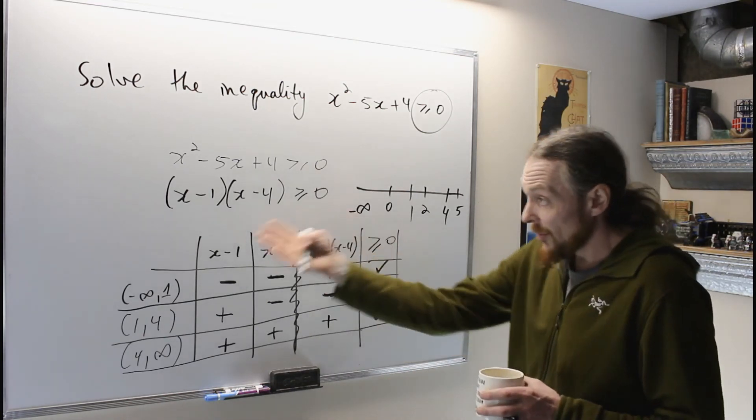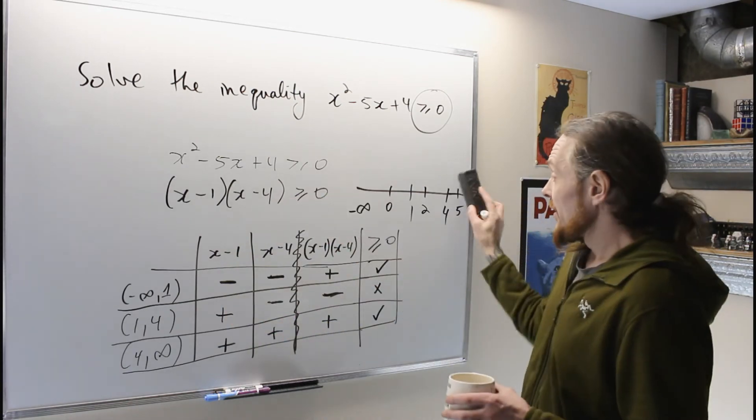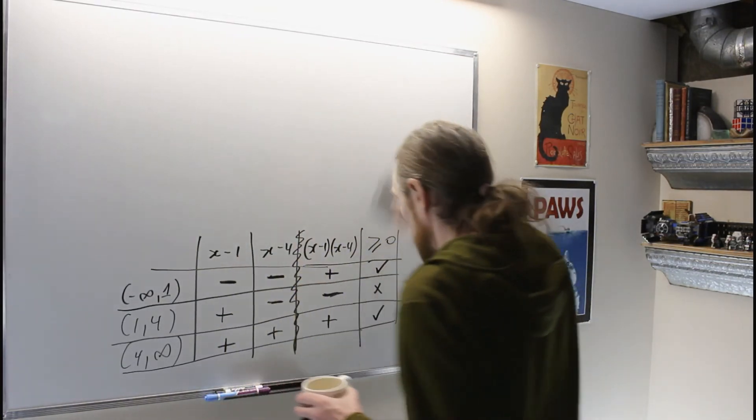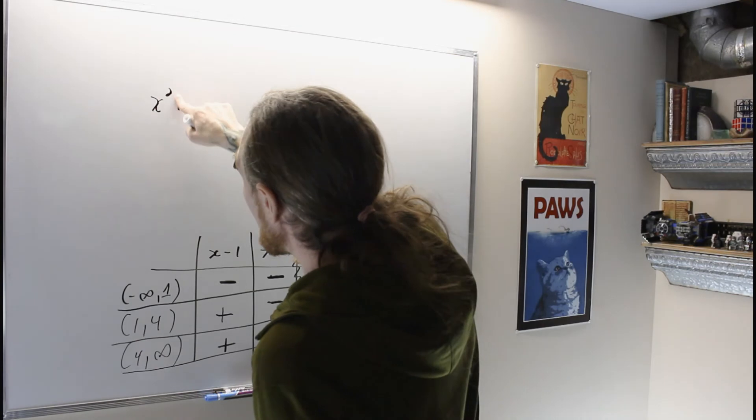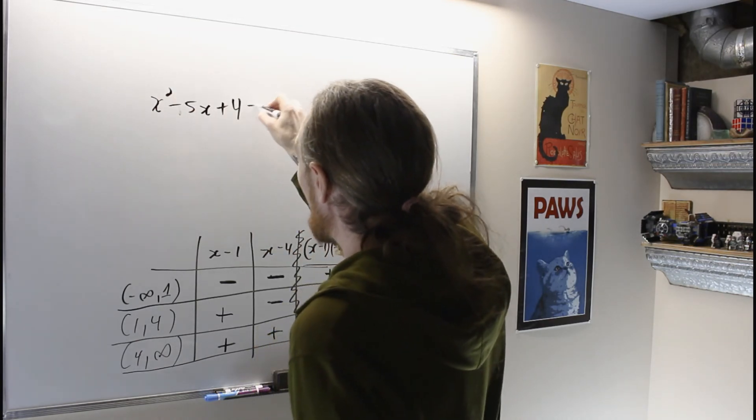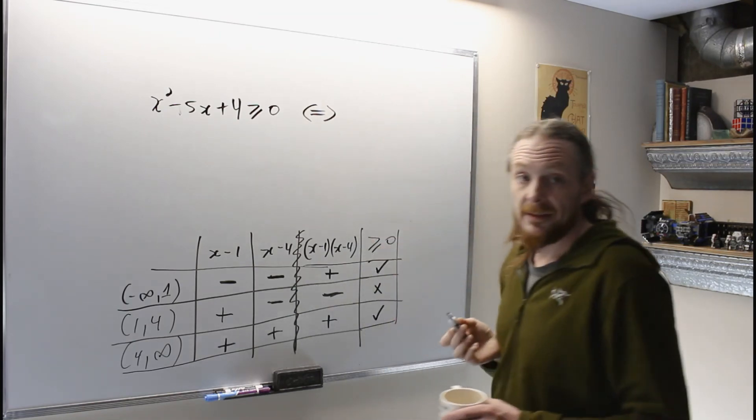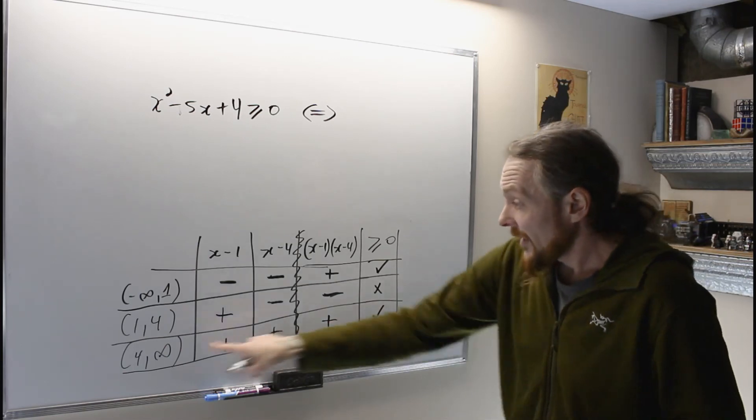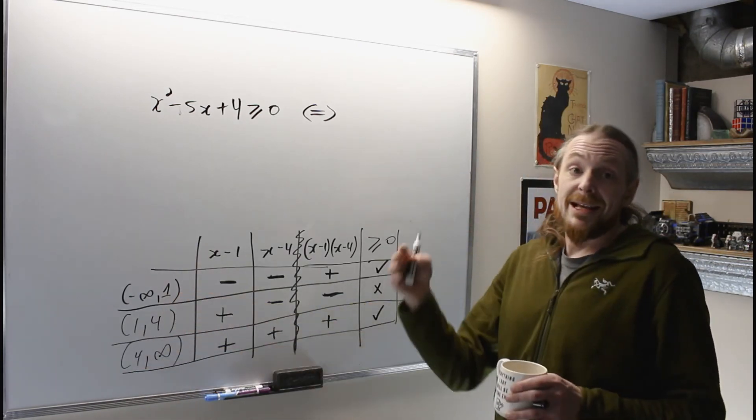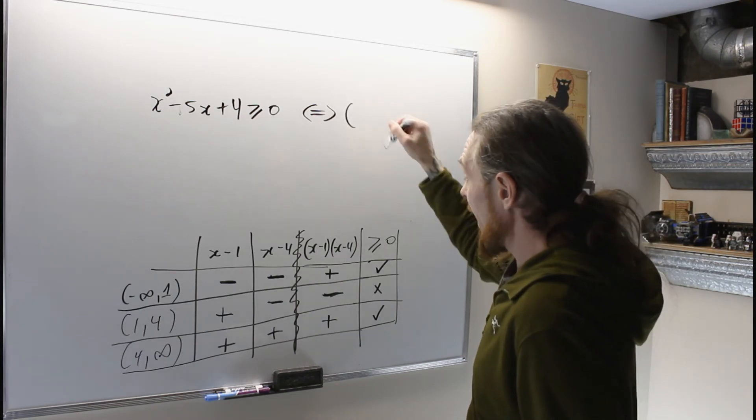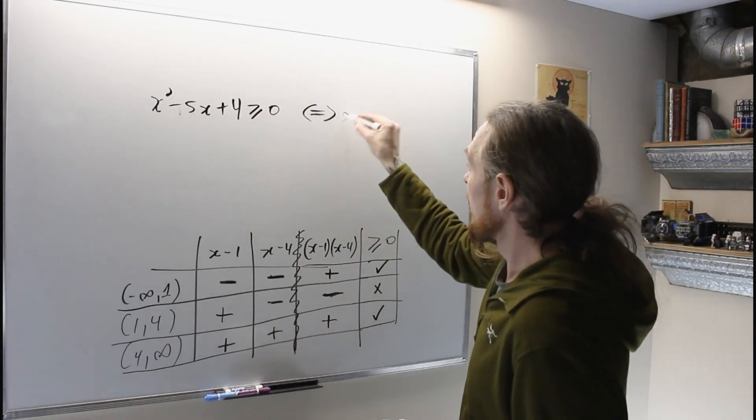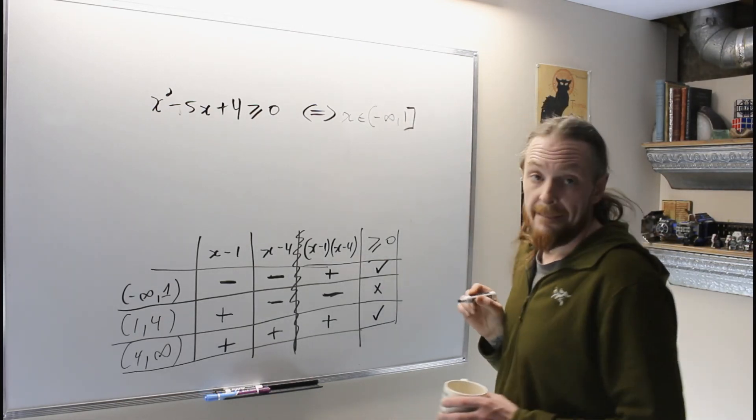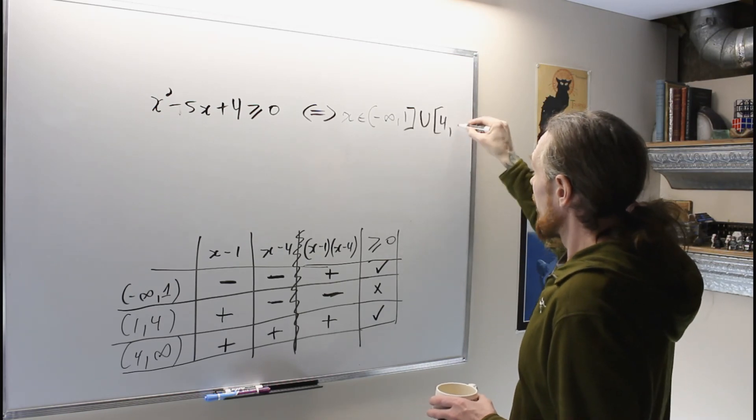What that says now is from the table, we can assess when this is true. So what we're really saying is x squared minus 5x plus 4 is greater than or equal to 0 if and only if, and now I can see from my table, this interval I can keep, and this interval I can keep, and I can use square brackets for the numbers because it was a less than or equals inequality. So this will say x is in negative infinity to 1, union 4 to infinity.